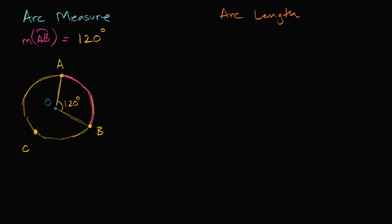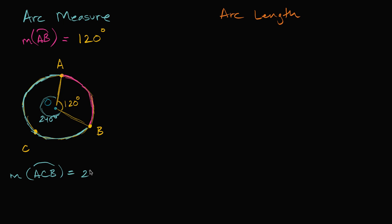What about the major arc? If we're talking about arc ACB — using three letters to specify the major arc going the other way around — the central angle going all the way around the circle is 360 degrees. So the measure of arc ACB is 360 minus 120, which equals 240 degrees.